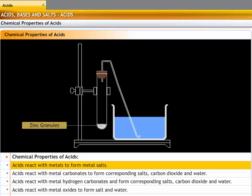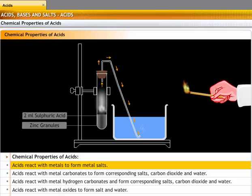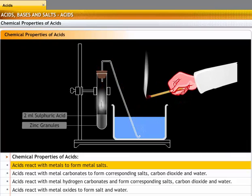Take a few granules of zinc in a test tube. Add 2 ml of sulfuric acid to it. You will find that a gas will be liberated. Bring a burning splinter close to the gas liberated. The splinter burns and a pop sound shows the presence of hydrogen.